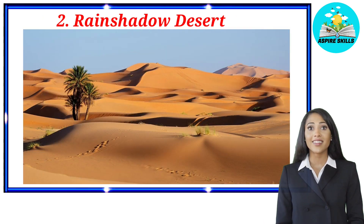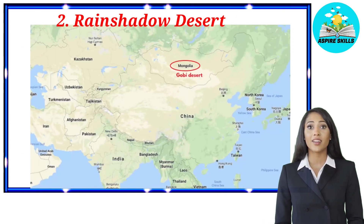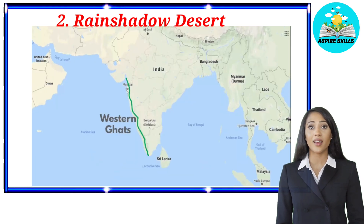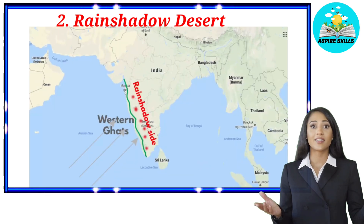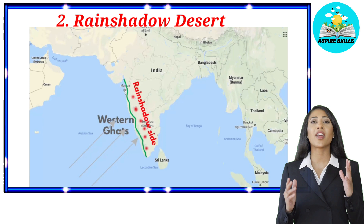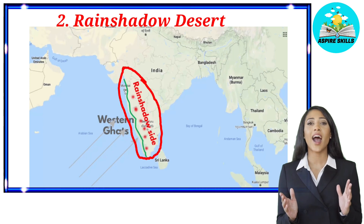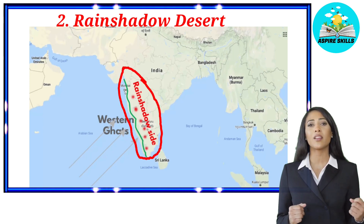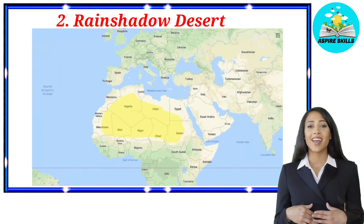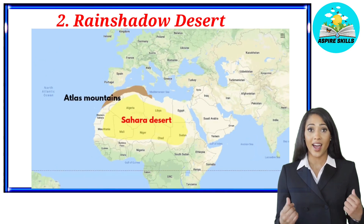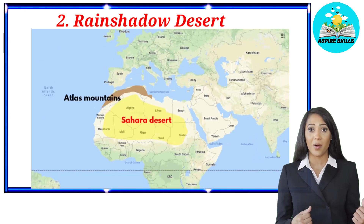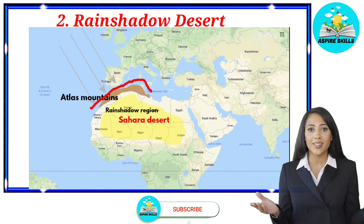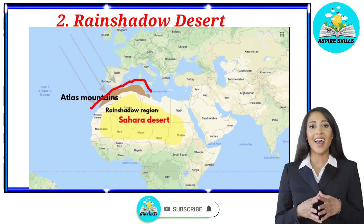Some examples of rain shadow deserts are Mongolia's Gobi Desert and the eastern part of the Western Ghats. If you look at the state of Karnataka, you will find some deserts located on the eastern side of the Western Ghats. Another example is the Sahara Desert, where the northern part of Africa is completely covered with Atlas Mountains that block the wind from the Atlantic Ocean and Mediterranean Sea.